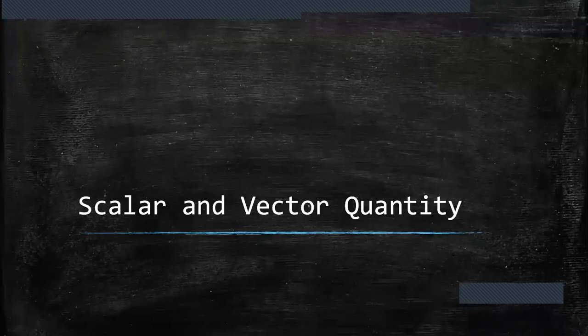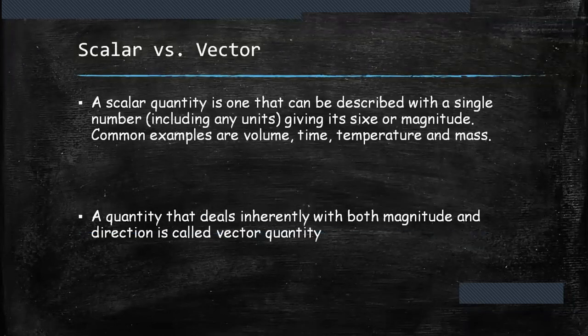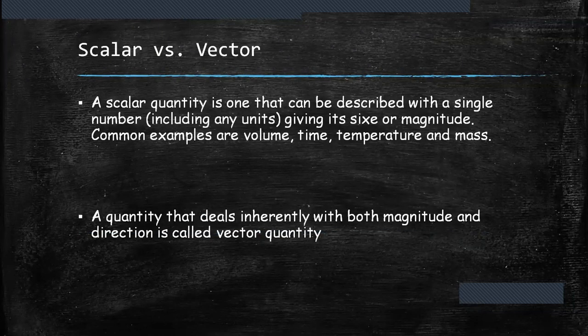Scalar and Vector Quantity. The scalar quantity is one that can be described with a single number, including any units, giving it size or magnitude.